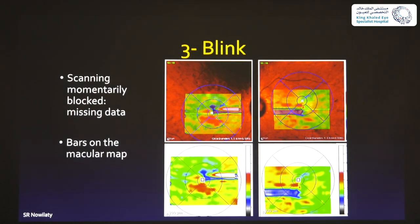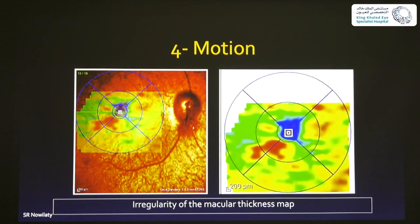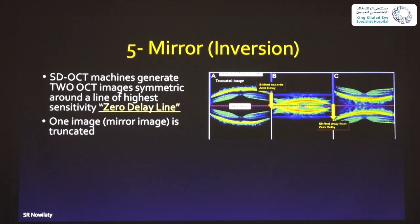Blink artifacts cannot be corrected — the patient has blinked. You recognize them by shadows and lines in the scan, in which the machine made a very wrong segmentation, showing as a very large thickness or a hyper-reflective area. Motion artifacts appear as horizontal lines across the image, similarly producing irregular maps. Mirror artifacts occur every time you have a lesion protruding towards the vitreous, or in patients with myopia and posterior staphyloma where the eye wall is irregular — the machine cannot focus both on the intended area and the irregular area simultaneously.